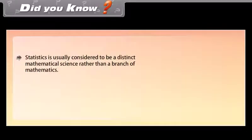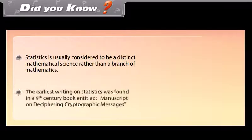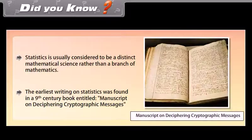Did you know? Statistics is usually considered to be a distinct mathematical science rather than a branch of mathematics. The earliest writing on statistics was found in a 9th century book entitled 'Manuscript on Deciphering Cryptographic Messages.'